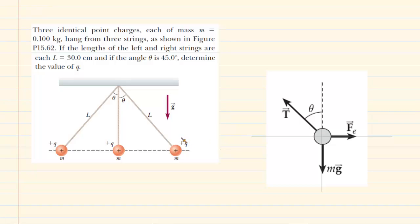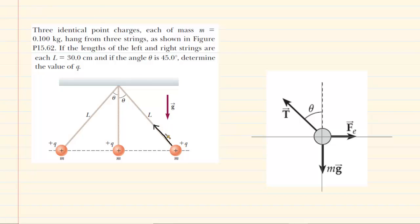In order to determine the value of the charge Q, we're going to focus our attention on the rightmost charge and draw a free body diagram that shows the forces acting on that charge. That diagram is to the right. We can see the downward gravitational force, labeled mg. The charge on the far right is supported by a string that is pulling up and to the left, so we have labeled that force as a tension force acting at a certain angle.